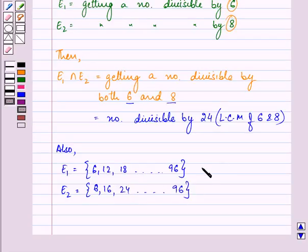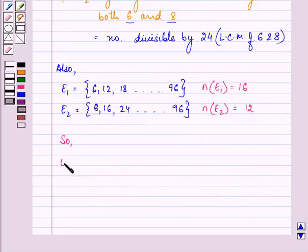That means number of elements in event 1 are equal to 16 and number of elements in event 2 are equal to 12. So, E1 intersection E2 is equal to 4.